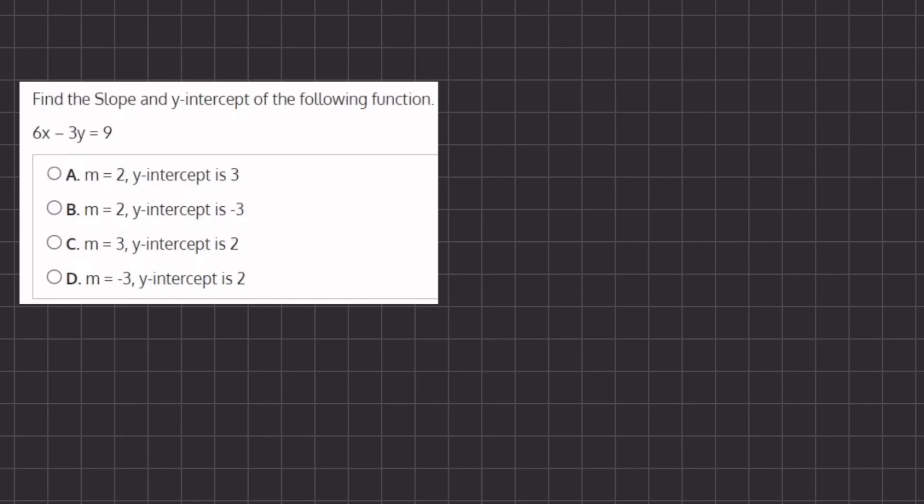In this problem we want to find the slope and y-intercept of the following function. In order to find the slope and y-intercept, we want to put our function into point-slope form, which is y = mx + c, where m is our slope and c is our y-intercept.